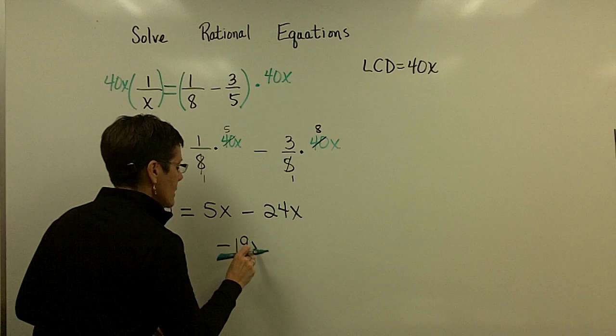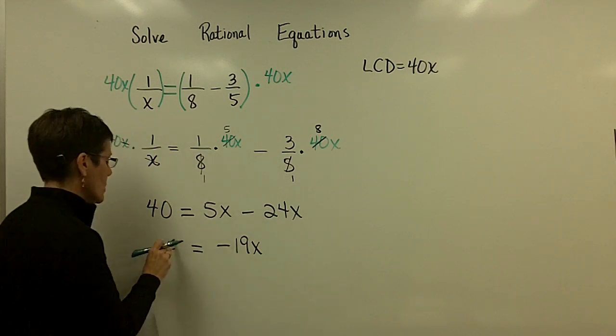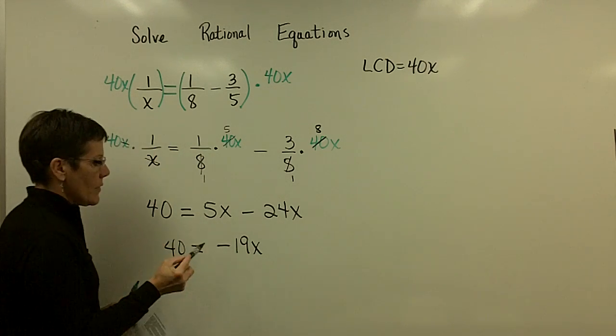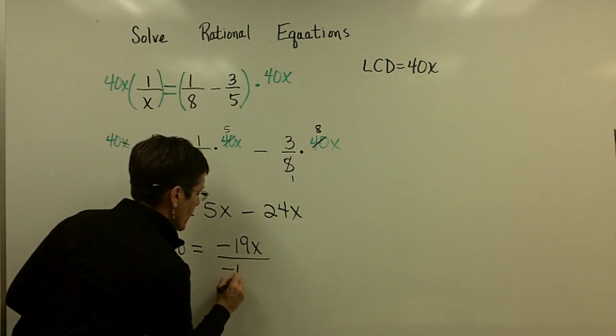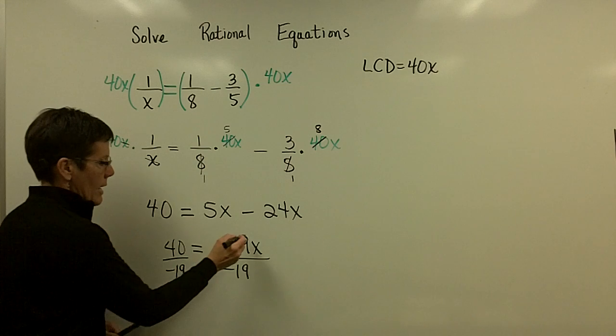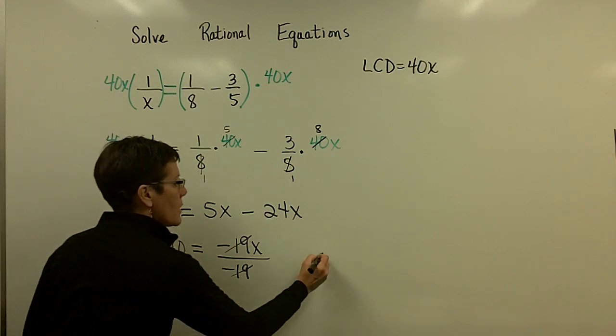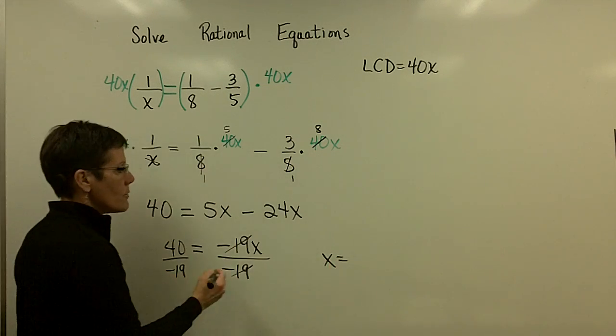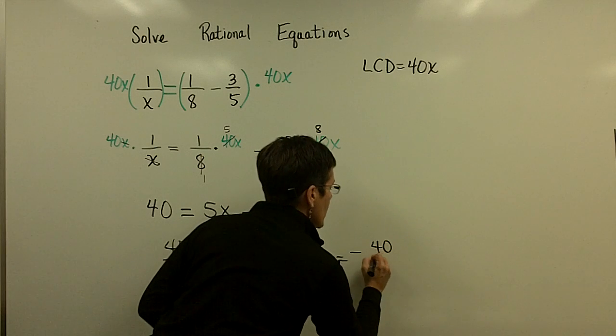Denominators are gone. And now what you have is, over here, a negative 19x when you collect those like terms, equals 40. And then I'm just solving for x because I want a numerical value for this. And that is, divide both sides by a negative 19. And I have a solution for x. It is a negative 40/19ths.